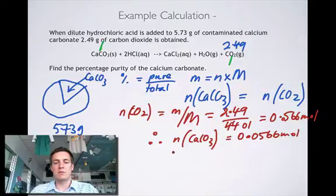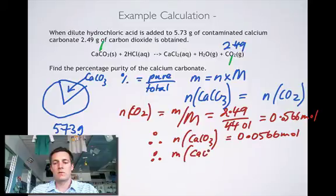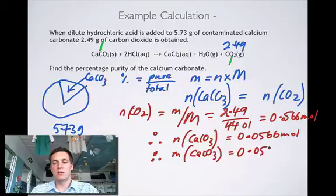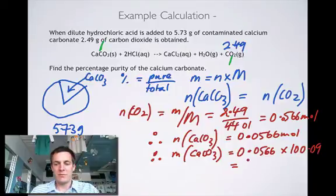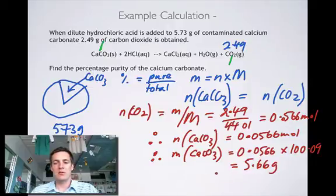And we can go ahead and find the mass of calcium carbonate by saying it is the number of moles times the molar mass. So that's 0.0566 multiplied by 100.09, and what does that equal? That equals 5.66 grams. Not surprising, it's quite close to that. So 5.66 grams of this 5.73 is calcium carbonate.